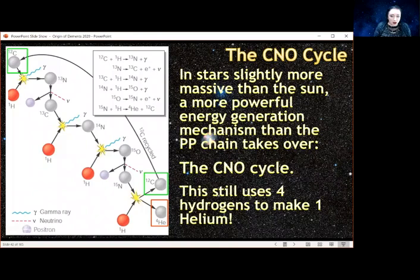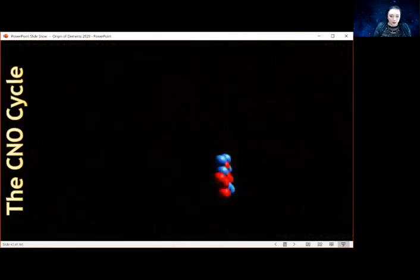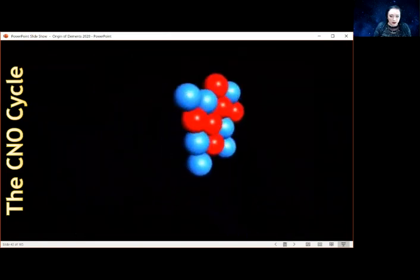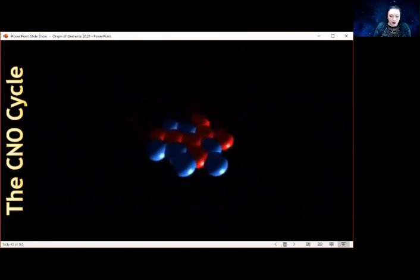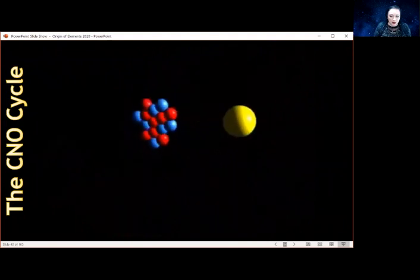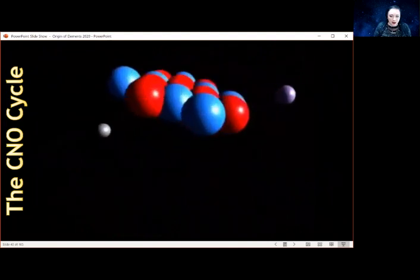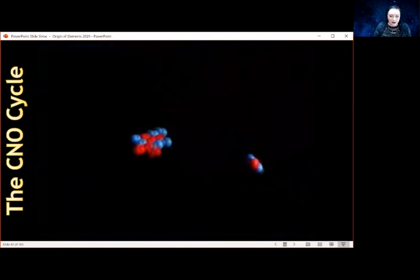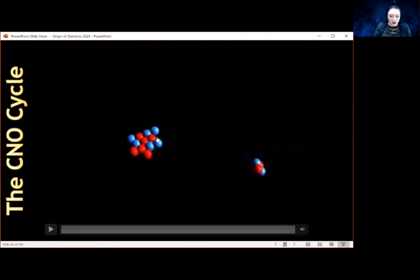We start with carbon-12 and we end with carbon-12, but in the process we're taking four hydrogen nuclei and turning them into one helium. It's doing the same thing as just sticking protons together, but it's using carbon as a way to change the cycle. Let's have a look at that in motion. A proton comes along, it throws out a positron, another proton comes along, throws out a positron, and now it decays and gives us an alpha particle and a carbon.